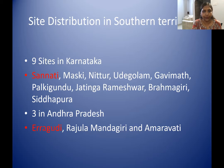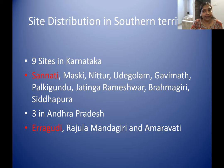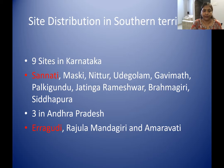The nine South Indian sites in Karnataka are: Sanati, Maski, Nittur, Udagala, Gavimath, Palkigundu, Jatinga-Rameshwar, Brahmagiri, and Siddhapur. In Andhra Pradesh there are three sites: Eragudi, Rajulamandagiri, and Amaravati. Sanati and Eragudi are highlighted because at Sanati we get only major rock edicts, and at Eragudi we get both major and minor rock edicts. All other sites have only minor rock edicts. At Amaravati we get a typical inscription engraved on a fragmentary pillar, but whose content is not that of a standard pillar edict.